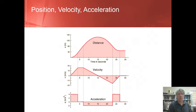Notice that the acceleration graph has steady values of acceleration as time advances. It has 4, 0, negative 2, 4 again, and finally 0 meters per second squared levels of acceleration as time advances. Since the change in velocity is the integral of acceleration, determining the area beneath the acceleration graph will yield the change in velocity.